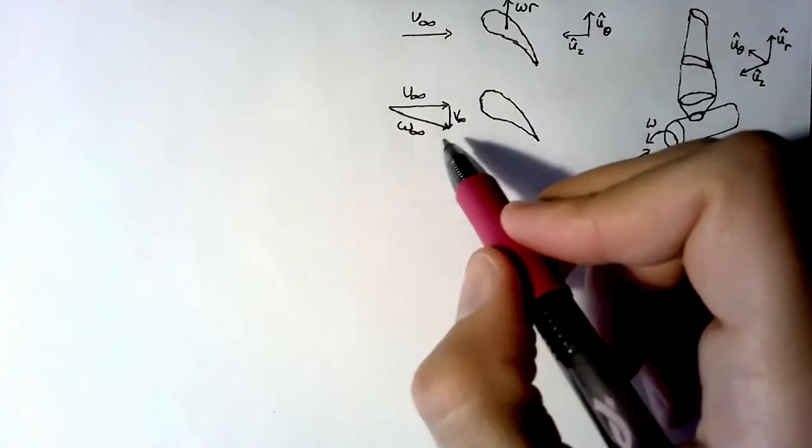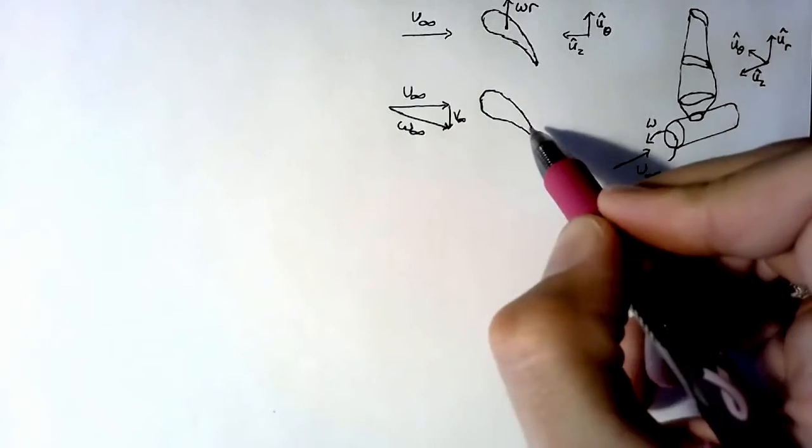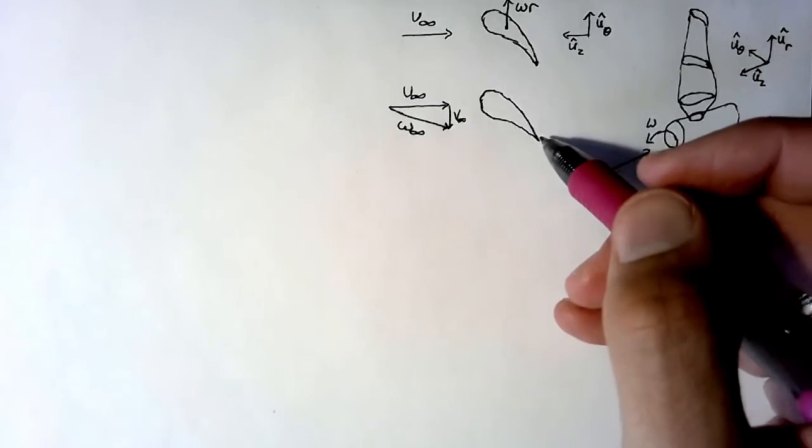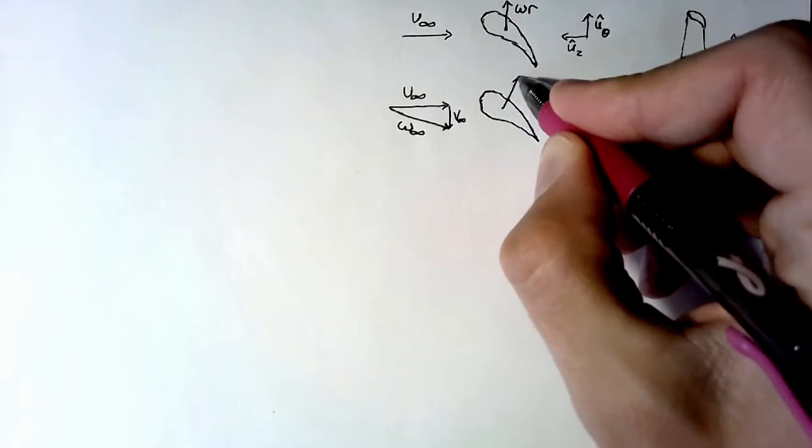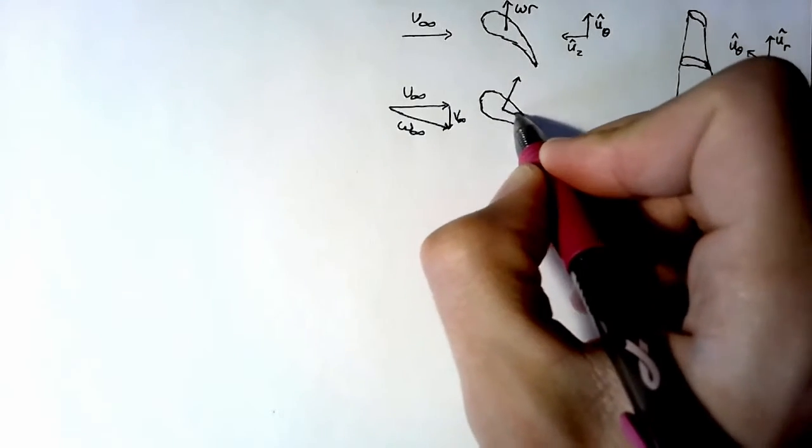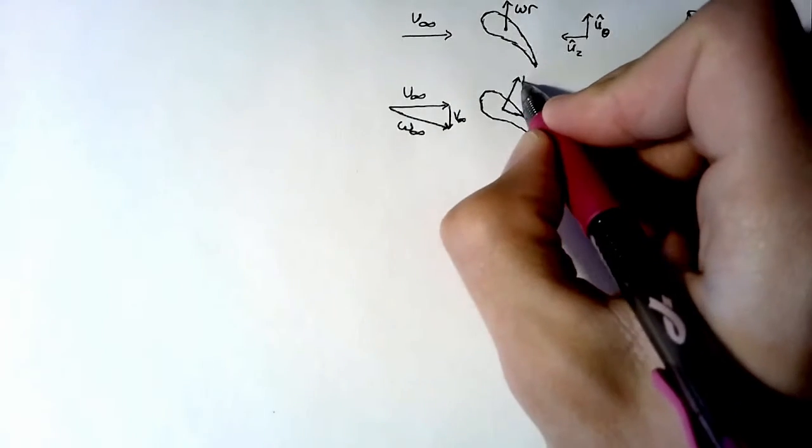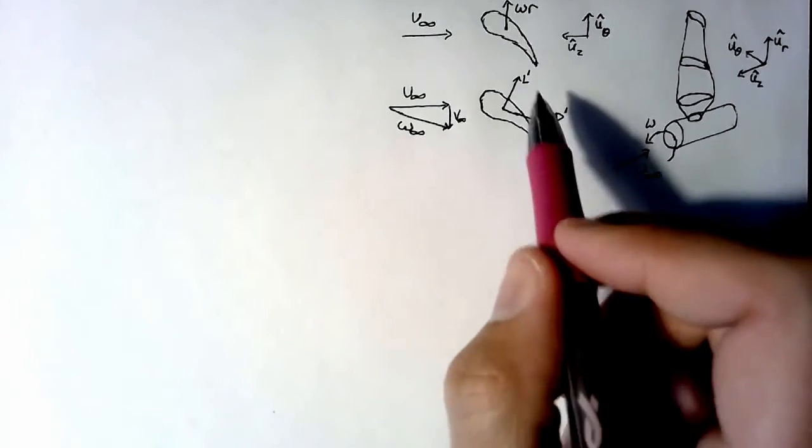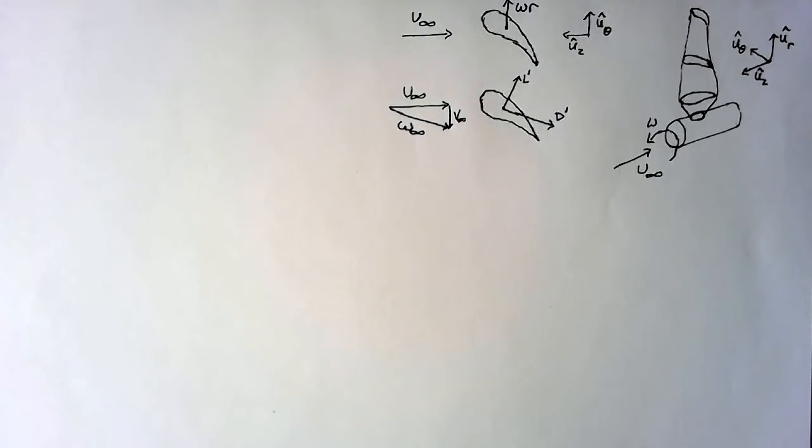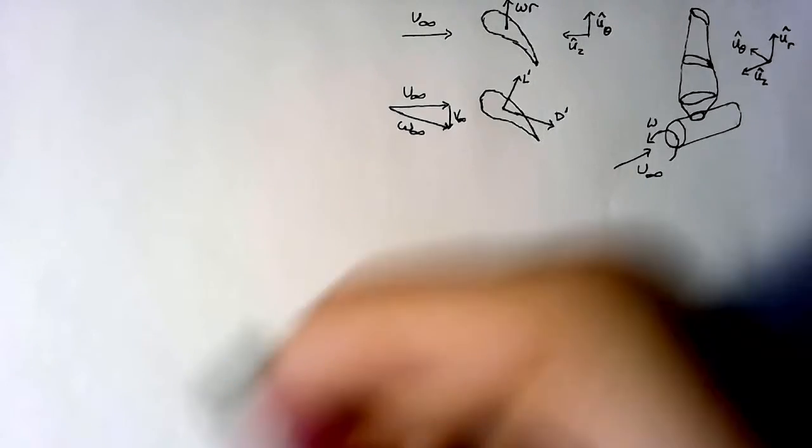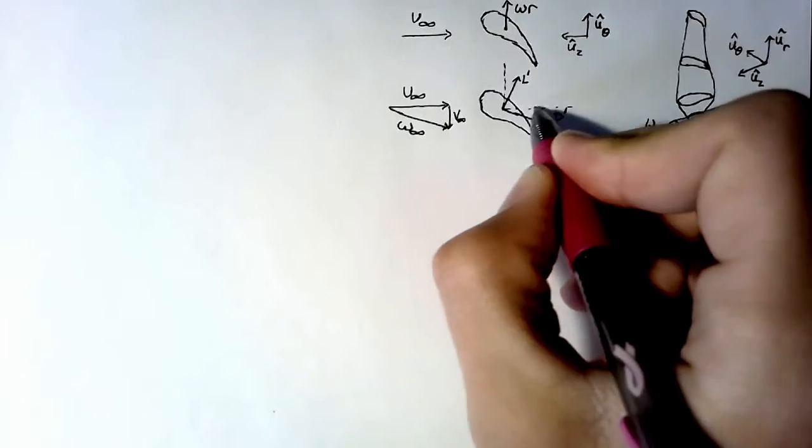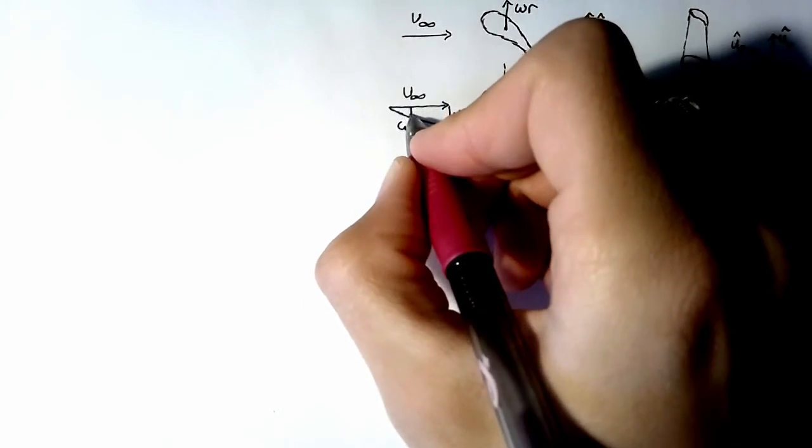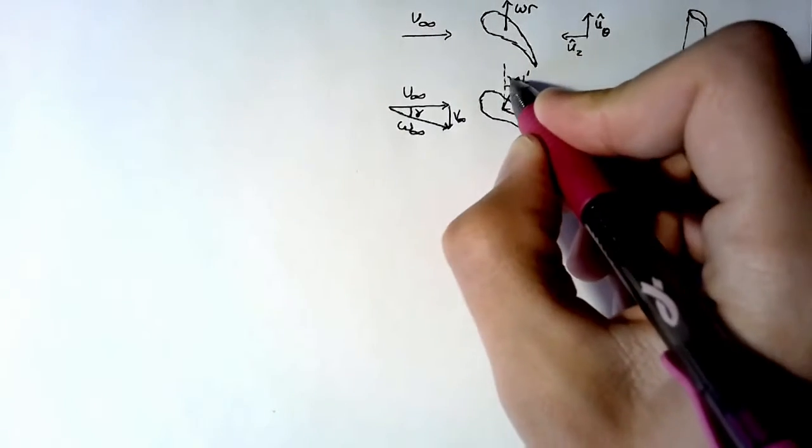Now we're interested in the force that this w-infinity creates on our airfoil. So we're going to have lift and drag. Our lift is going to be perpendicular to w-infinity, whereas our drag is going to be parallel to it. I'm going to call these l' and d' because these are sectional values, values per unit span. These are going to form an angle with the horizontal and vertical axes, which is the same as the angle of this w. I'm going to call that angle gamma.